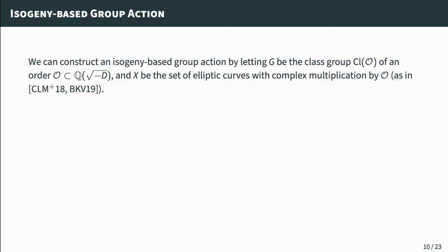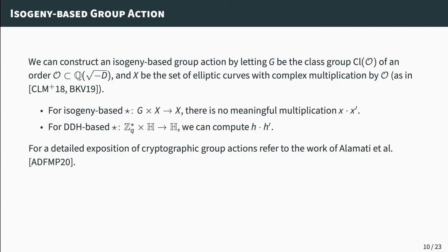Similarly, we can construct an isogeny-based group action. If we let G be the class group of an order in an imaginary quadratic field, and let X be the set of elliptic curves with complex multiplication by the same order, then we have an isogeny-based group action — already used in CSIDH and SEAFISH constructions. Comparing with the DDH-based group action: in the DDH setting we can multiply two elements from H since it is a group, but in the isogeny-based setting there is no meaningful operation between two elements from X — we cannot combine two elliptic curves. For a detailed exposition, refer to the work of Awamati et al.